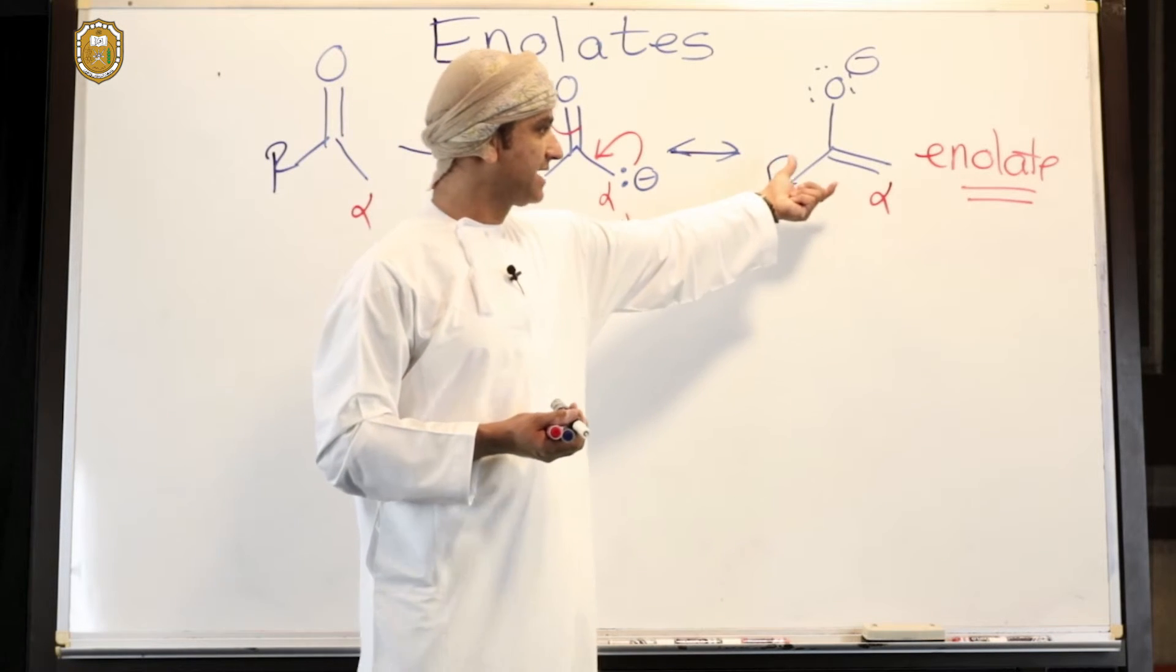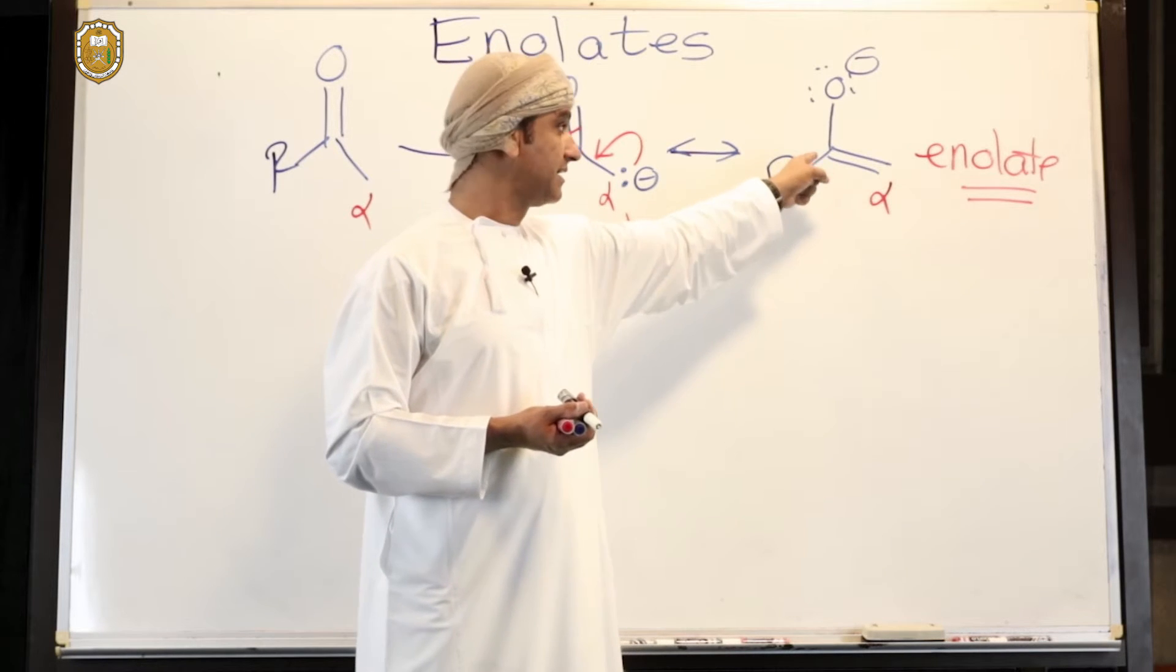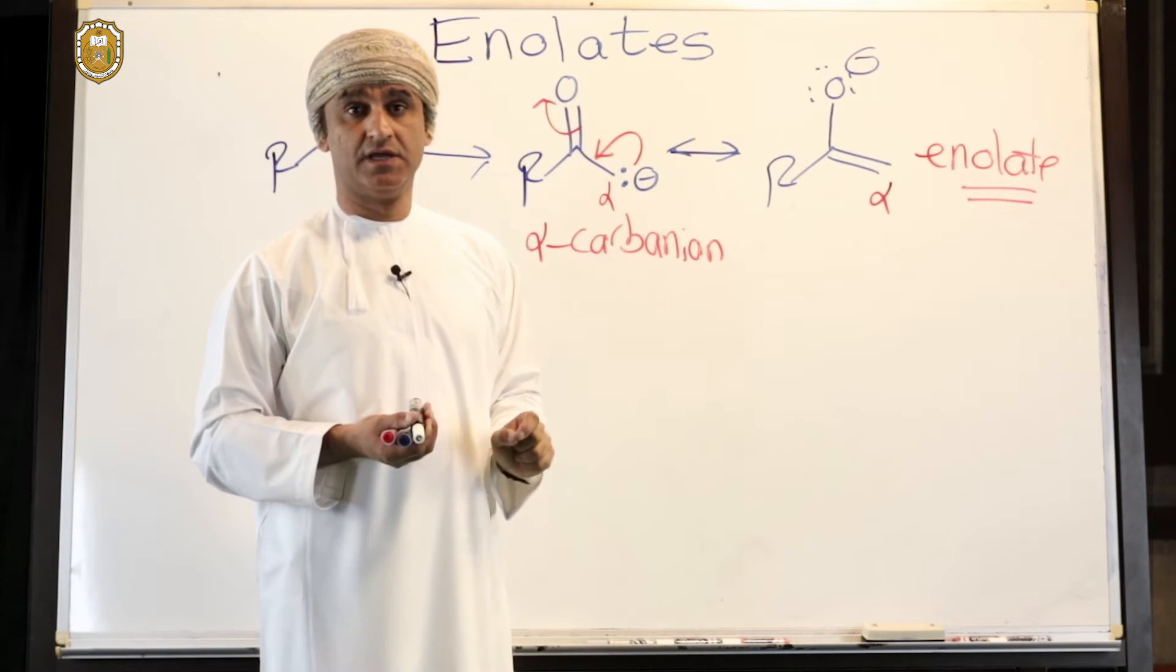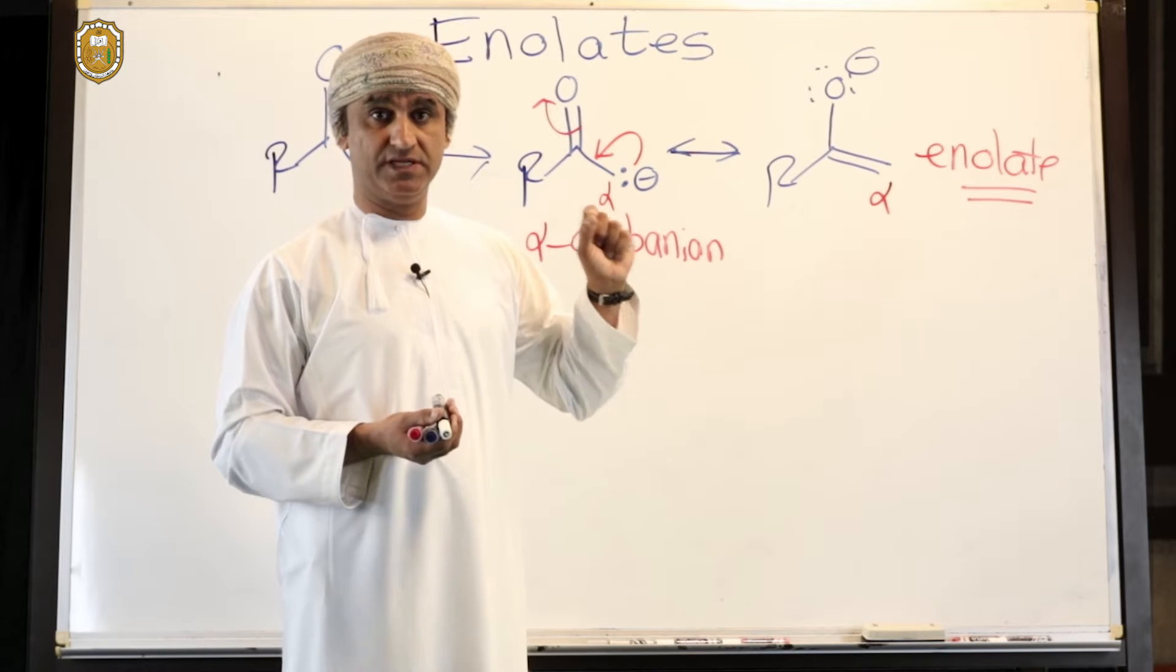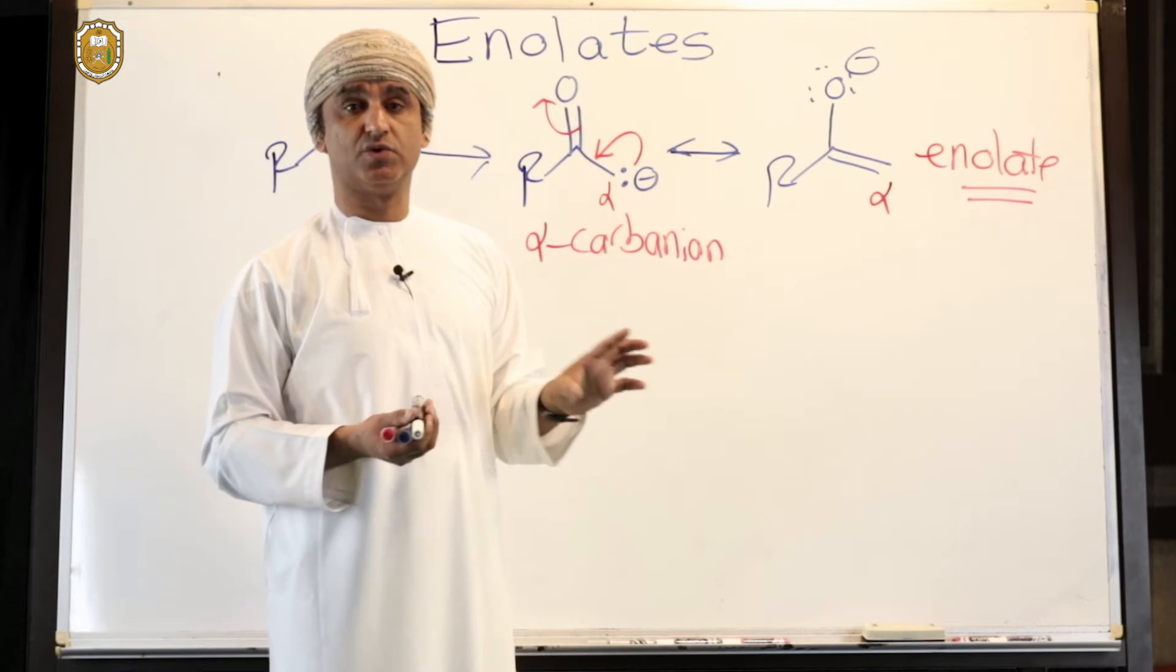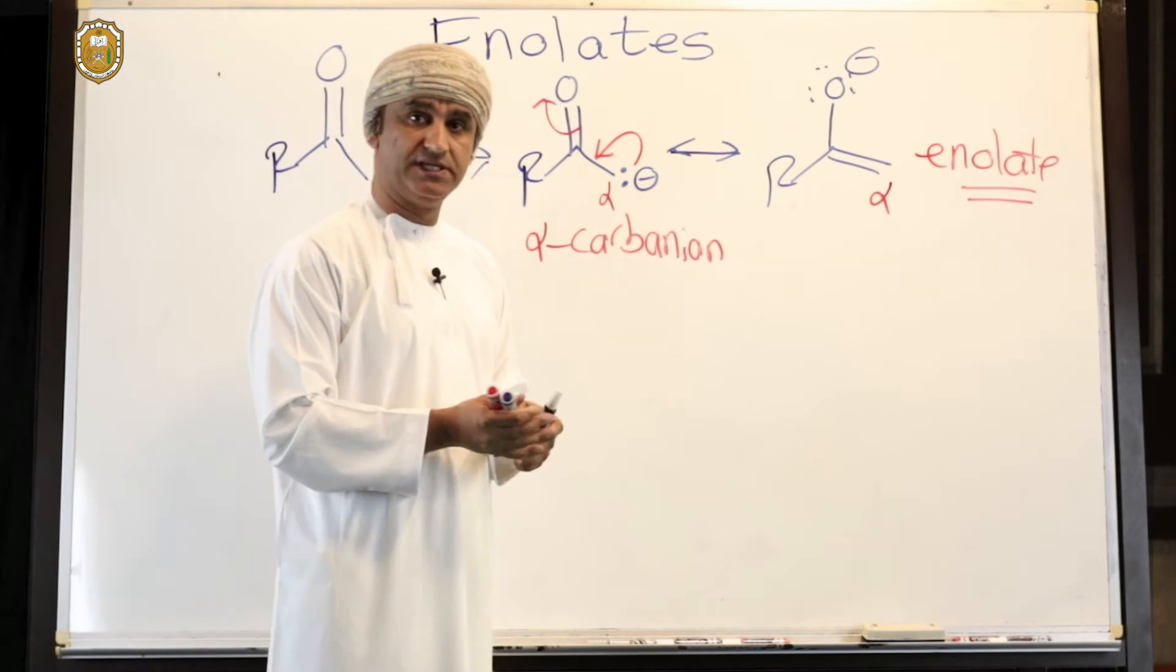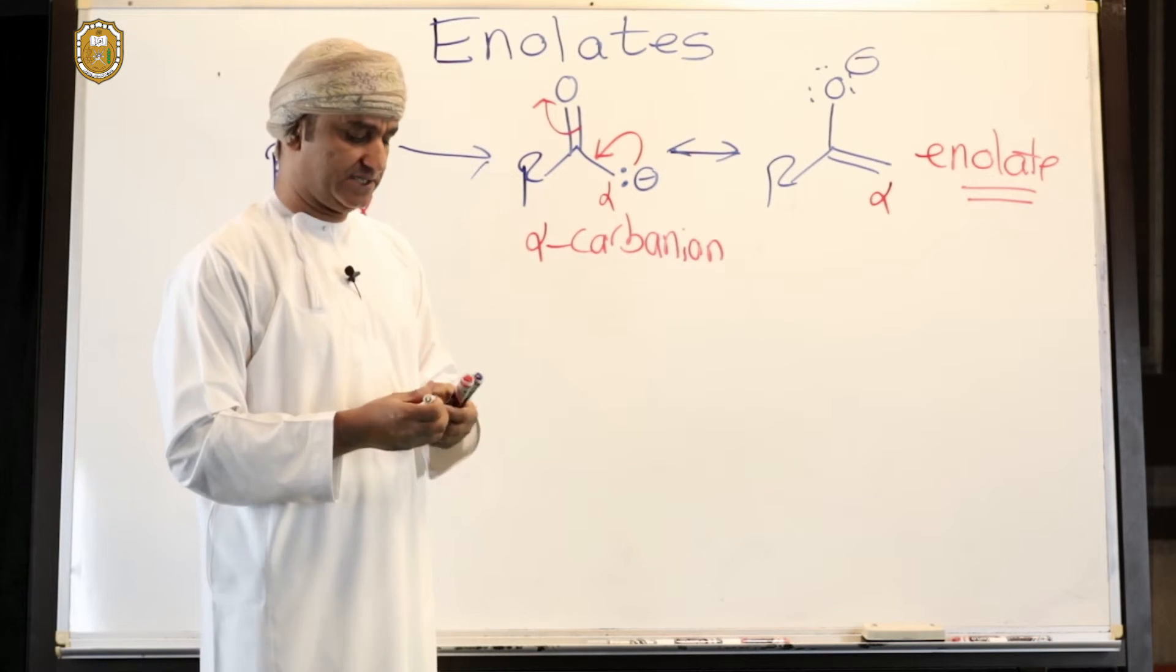This intermediate where there is a carbon-carbon double bond between the alpha carbon in a carbonyl compound and carbon one of the carbonyl group in the original compound, and a negative charge on that oxygen, is called an enolate. Enolates are very important intermediates in organic synthesis.